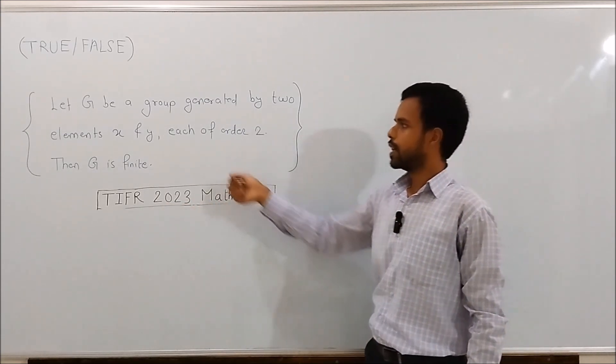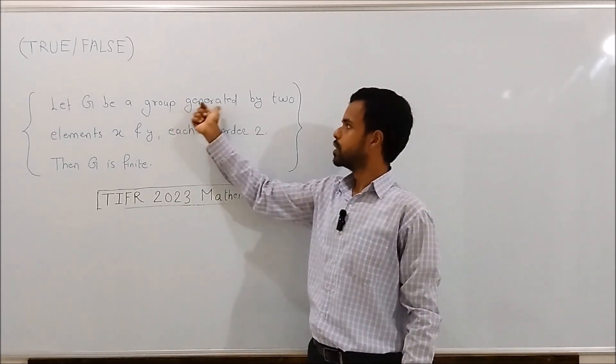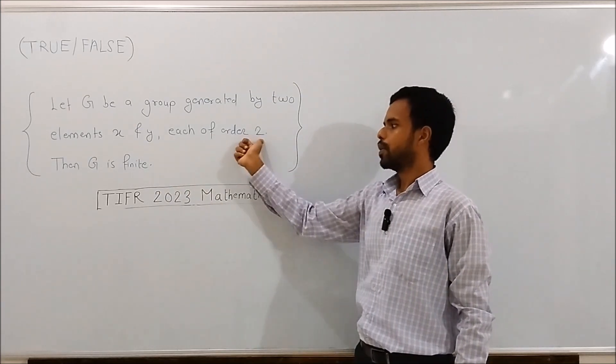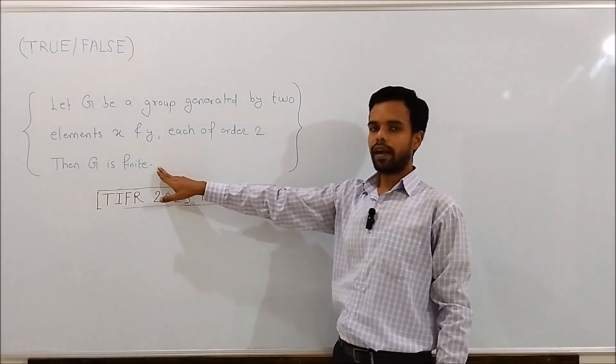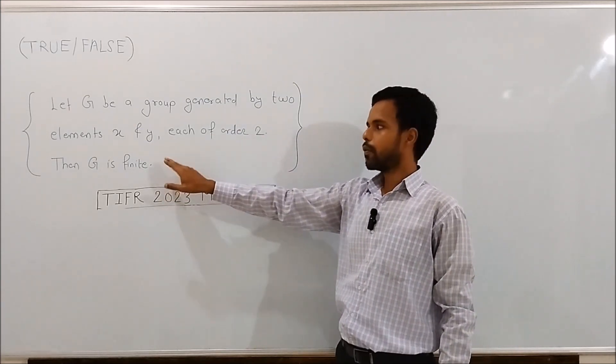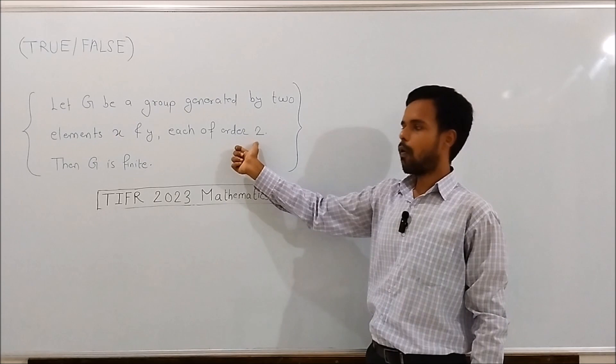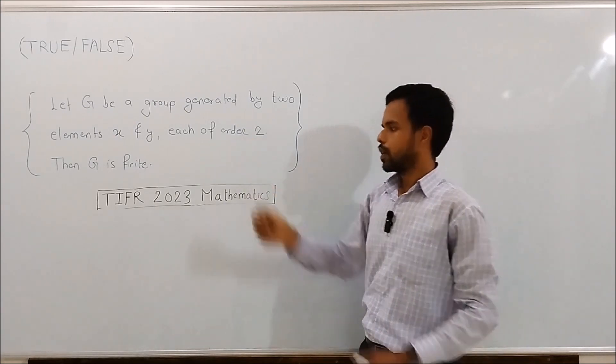The question is: let G be a group generated by two elements x and y, each of order 2. Then G is finite. We have to check whether this statement is true or false.